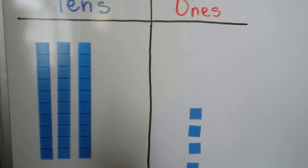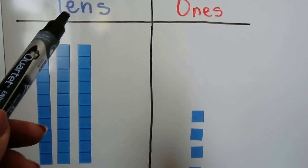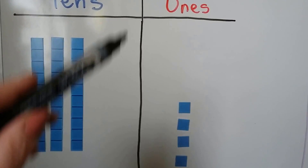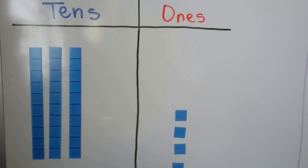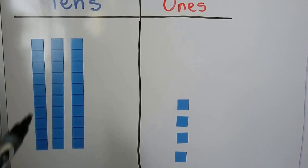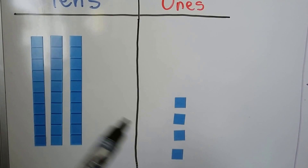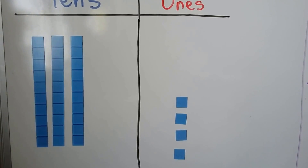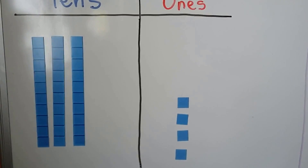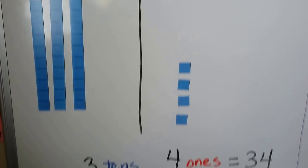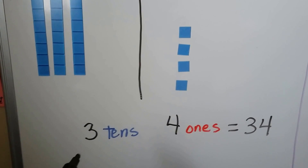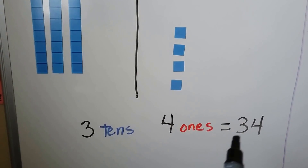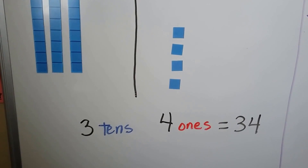Here we have tens and ones. We have them separated. We have one, two, three tens, and one, two, three, four ones. We have three tens and four ones.